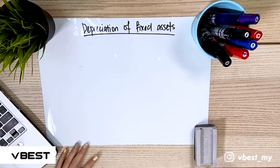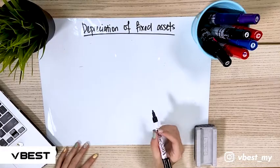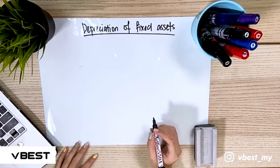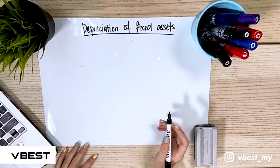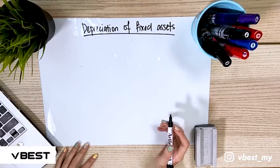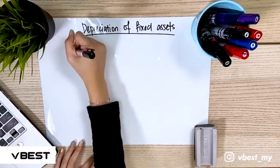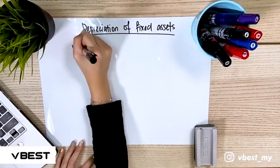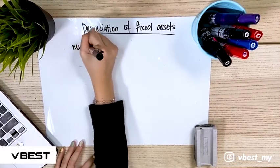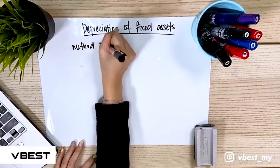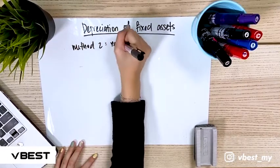Hi students, we are back. Today we are discussing the depreciation of fixed assets, Method 2, which is the reducing balance method.